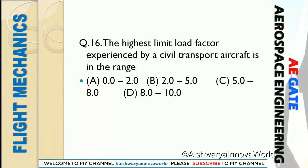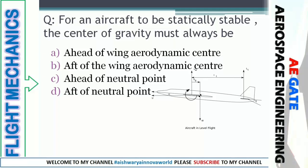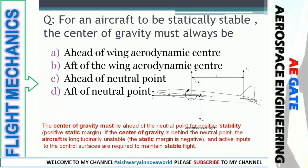For an aircraft to be statically stable, the center of gravity must lie ahead of the neutral point — this gives a positive static margin. If the center of gravity lies behind or after the neutral point, the static margin is negative — the aircraft is statically unstable. So our right option is option C: lies ahead.